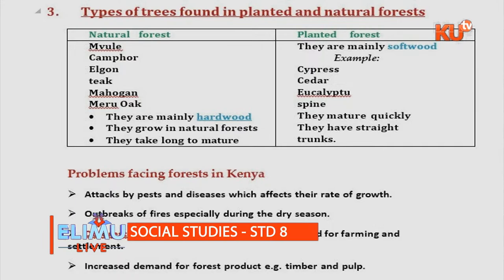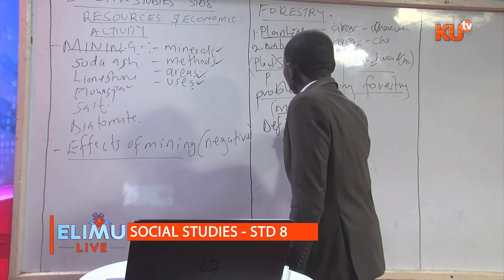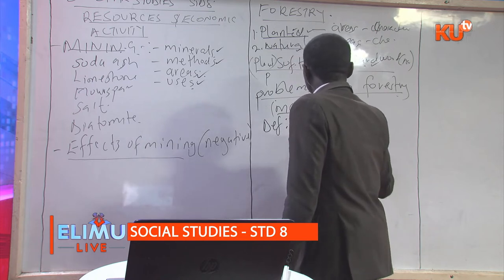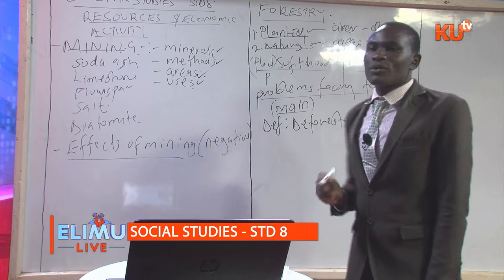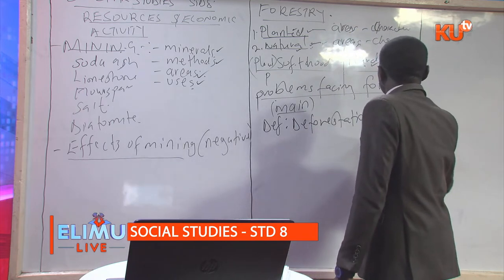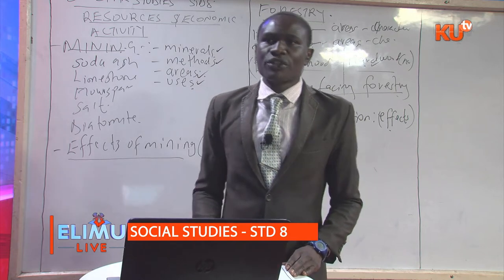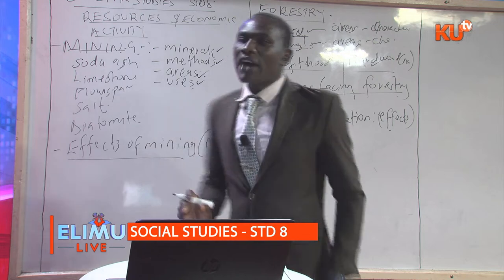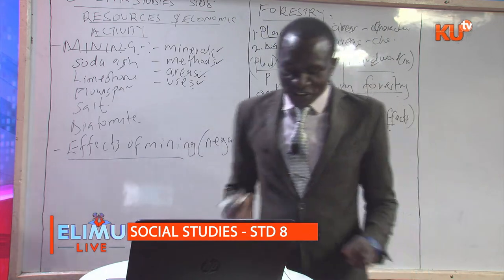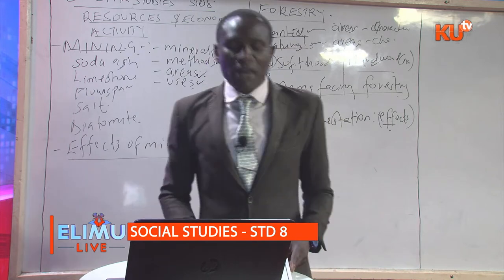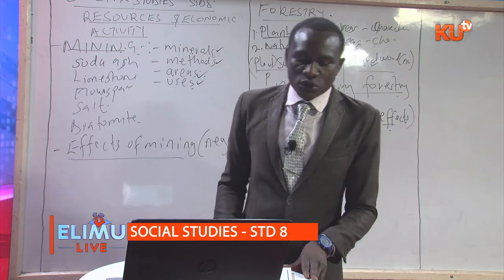After knowing the definition of deforestation, a candidate must be in a position to understand the effects of deforestation. All these effects are negative — there is no positive effect of deforestation on human activities. Some of these effects include: increase in soil erosion, loss of species, reduction of forest production, and cutting down of trees may also lead to desertification.